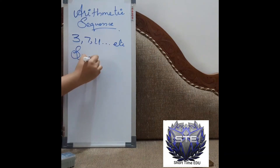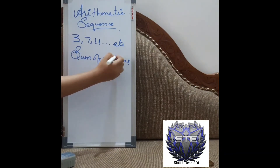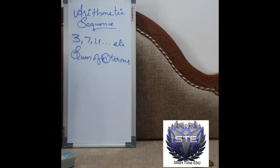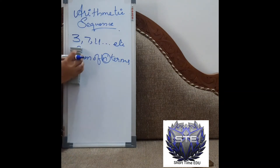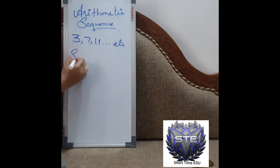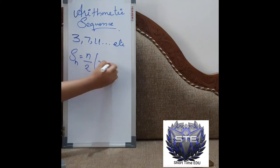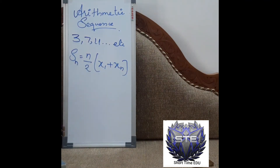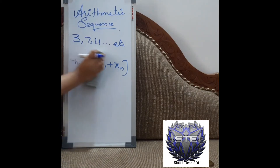Next, we have to learn how to find the sum of n terms. The general formula for finding the sum of n terms of an arithmetic sequence is important. There are also specific formulas for natural numbers, odd numbers, and even numbers.